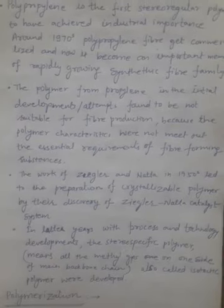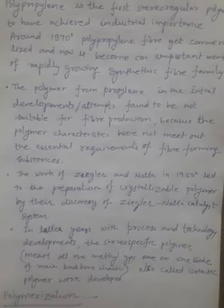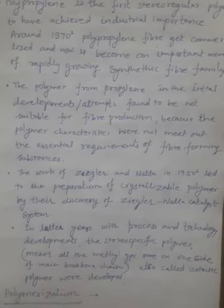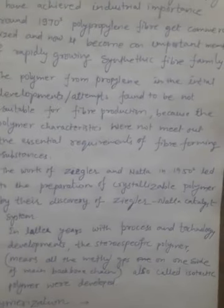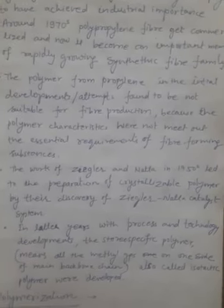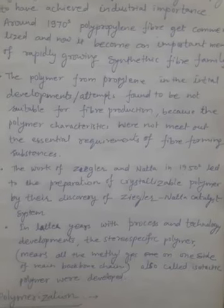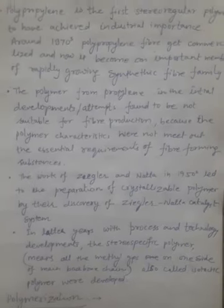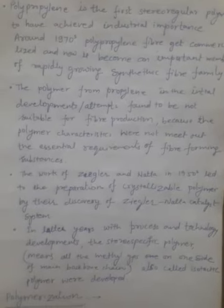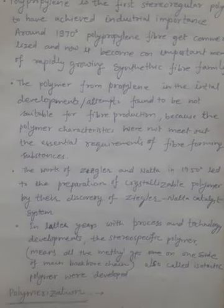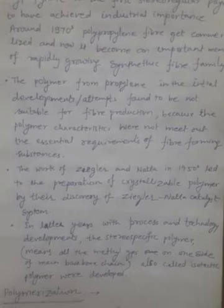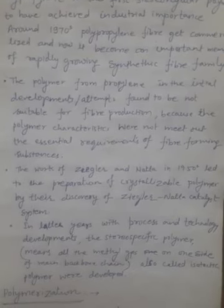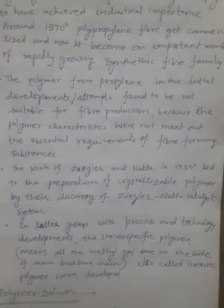The initial industrial developments and attempts to produce polymer from propylene were not found very successful. The reason being the polymers produced had large side chains, and the essential requirements needed to form a successful textile fiber were not present in the polypropylene produced by those initial polymerization processes.